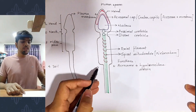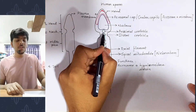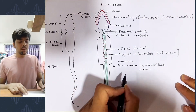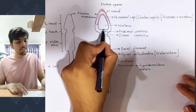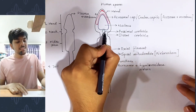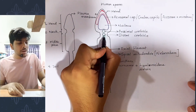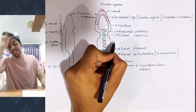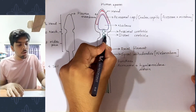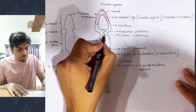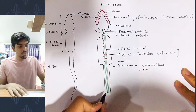The head is connected with the middle piece with the help of a very narrow neck. This narrow neck contains two centrioles. One centriole is present towards the head region — more specifically, right beneath the depression present at the bottom of the nucleus. This centriole is present at the proximal end, so called the proximal centriole. The second centriole is present in the middle of the neck, towards the distal end, and is called the distal centriole. The distal centriole of a human sperm gives rise to the axial filament, which runs throughout the middle piece as well as the tail region.